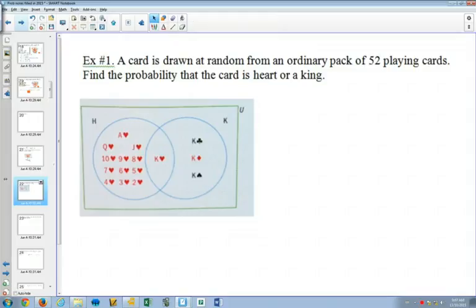So here's our first example. A card is drawn from an ordinary pack of 52 cards. Find the probability that the card is a heart or a king. So we want to find the probability of a heart or a king.